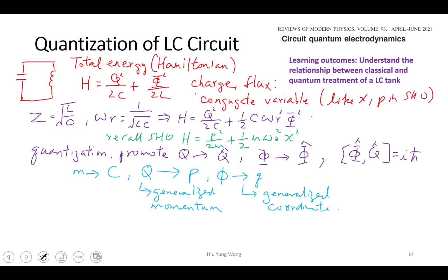Because we already done that in simple harmonic oscillator, you see that M is just the C, the mass becomes the capacitance. Q is the P and flux is the Q. This charge Q is the generalized momentum and this flux is the generalized coordinate.